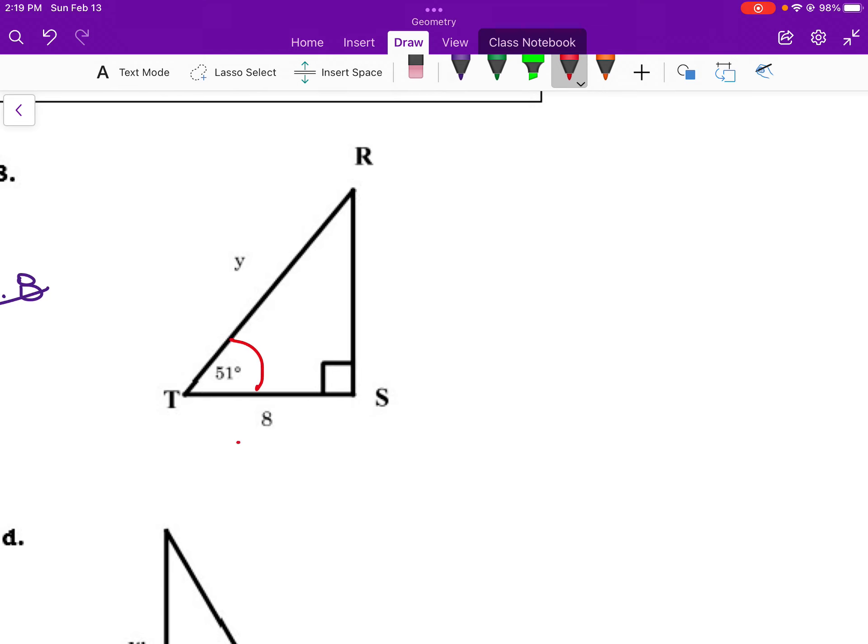Now we have 51 degrees. With respect to that angle, we have the adjacent and the hypotenuse that are labeled. So those are the two elements of the cosine ratio. So cosine of 51 degrees equals the adjacent, which is 8, over the unknown. So this one's a little bit different because now the variable's stuck in the denominator. So I actually have to multiply y to both sides to get it out of the denominator. So y cosine 51 equals 8.